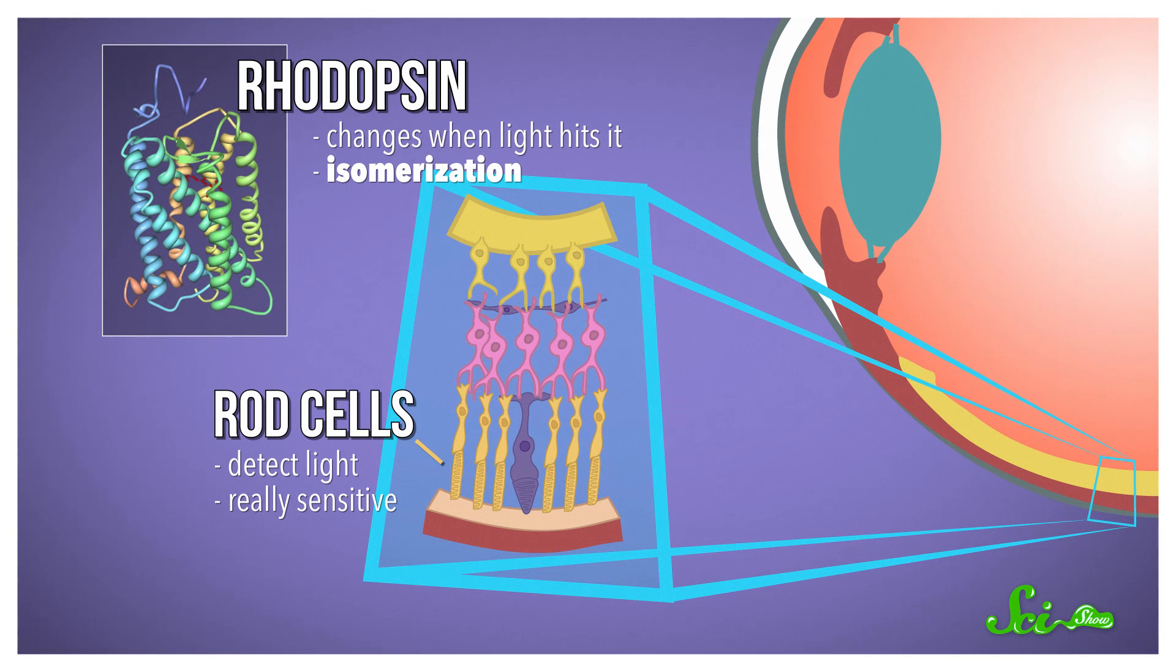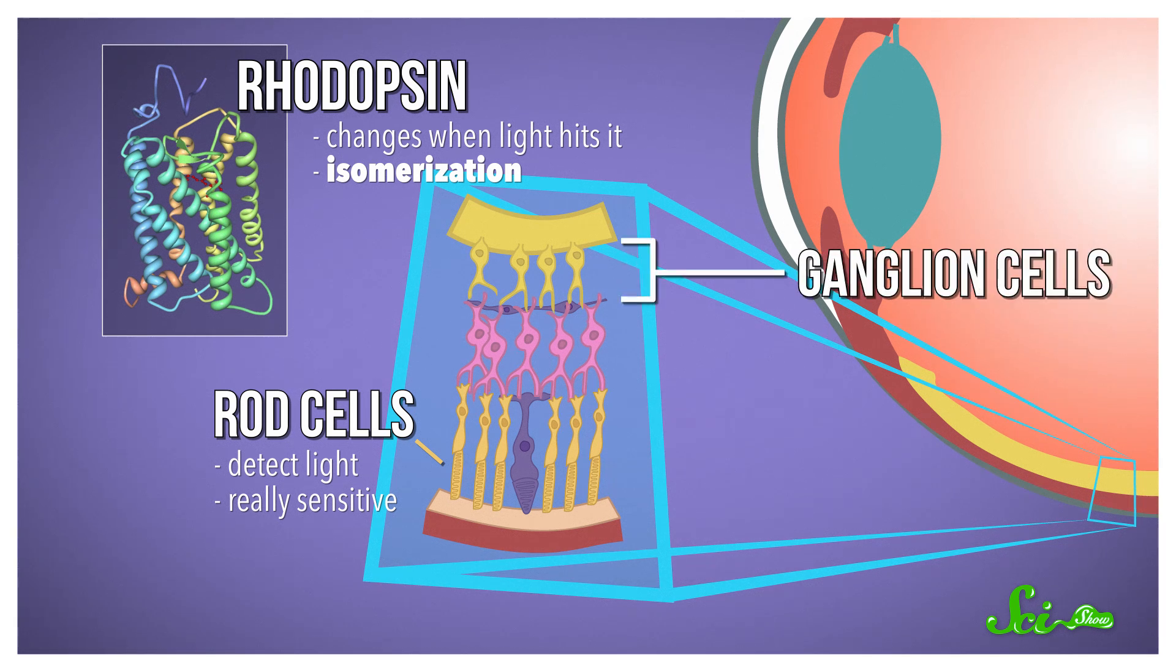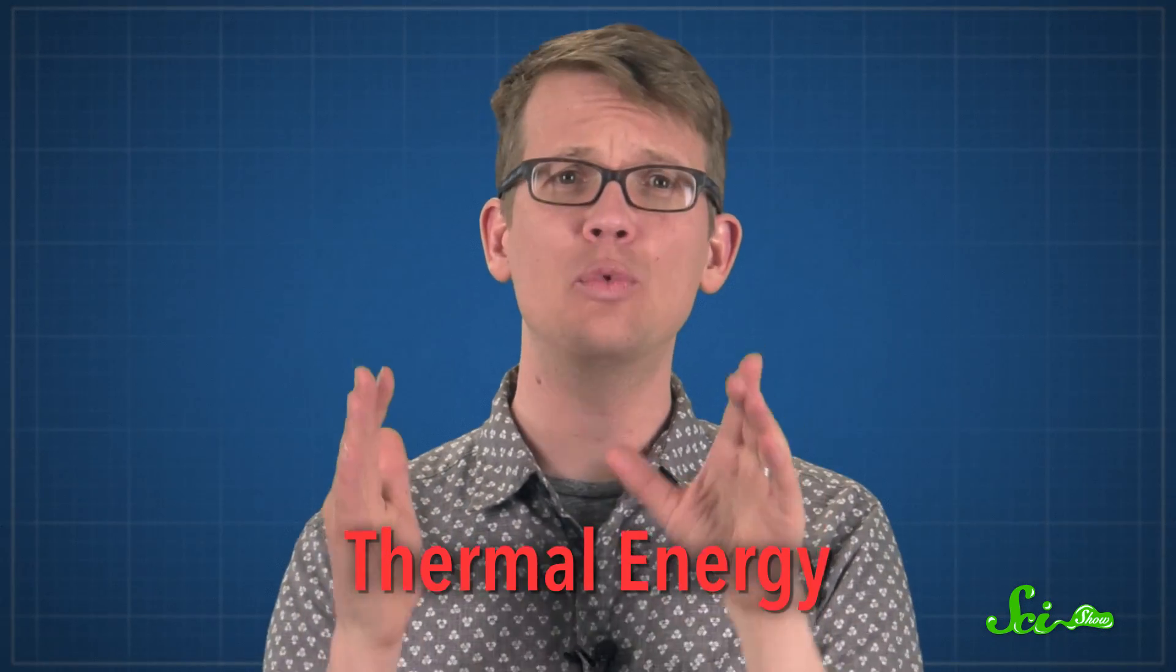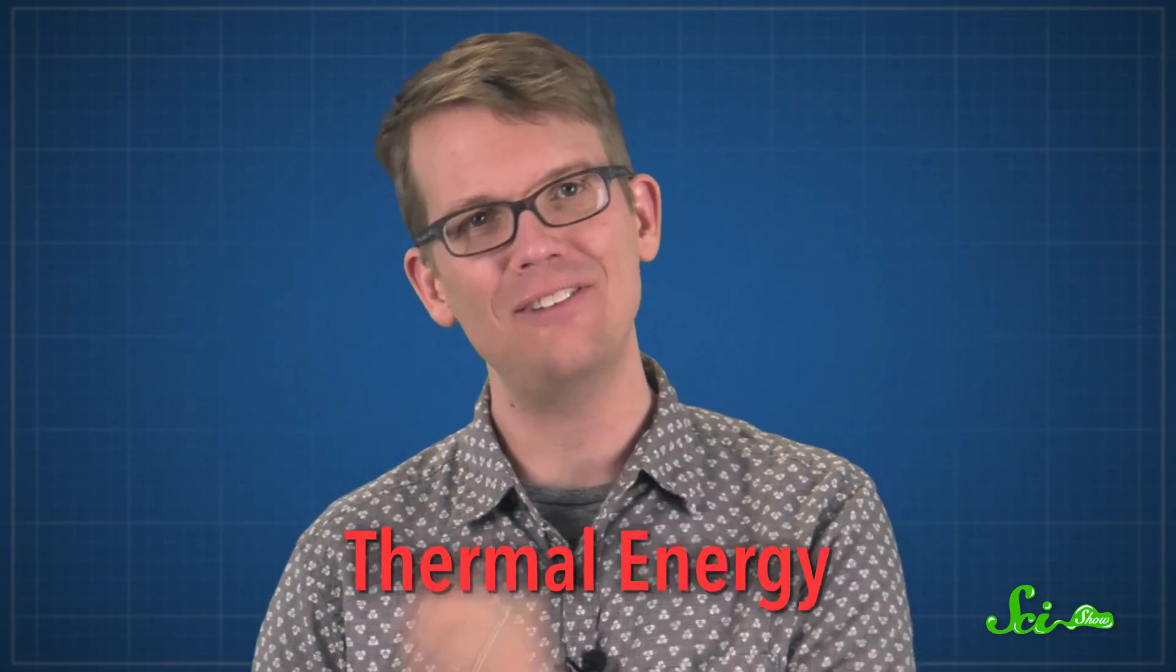This change causes a special cell called a ganglion cell to send a signal to your brain, which processes the signal into an image. But other types of energy can cause rhodopsin to change form too, like thermal energy. So your eyes can respond to heat instead of light.